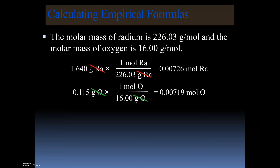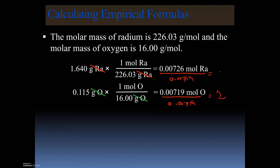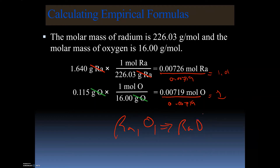Step one: figure out the mass of the elements. Step two: figure out the moles. Step three: figure out the ratio by dividing by the smallest value. In this example we divide by 0.00719. Radium gives approximately 1, and oxygen gives approximately 1.0097 — close enough to 1. So the formula is Ra1O1, which is simply RaO.